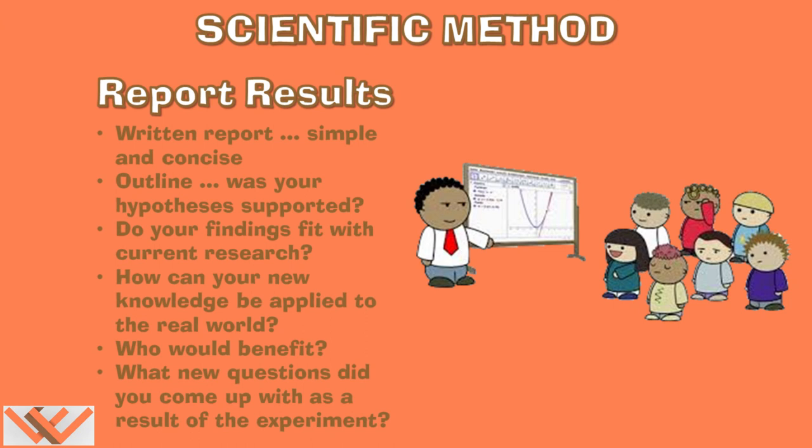Step eight, report your results. All scientists must be great record keepers. Your results must be written in a simple, concise way that outlines not only whether or not your hypothesis was supported, but also how your findings fit with current research. You have to write it out, you need to outline, was your hypothesis supported? Do your findings fit with current research? How can your new knowledge be applied to the real world? And who would benefit from that? And then what new questions did you come up with as a result of the experiment? You see how that goes? You start with a question and then you run your experiment and then you generate new questions.